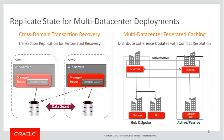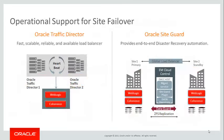Coherence multi-data center federated caching distributes Coherence updates with conflict resolution across different geographical areas. It can be active-active, where replication happens constantly and applications have local access to their cache data; active-passive, where the passive site becomes a backup for the active site; or hub-spoke, where the hub can replicate its cache data to different geographical areas.